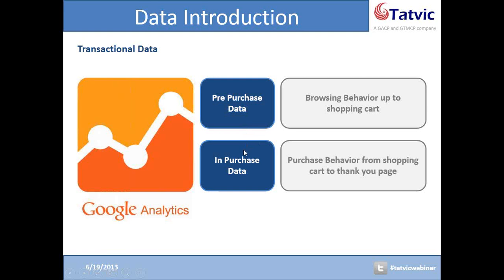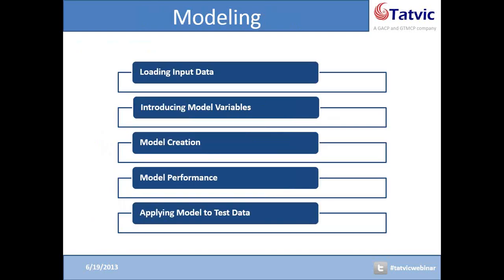Now that we've understood the background of the problem, let me move ahead and talk about the actual modeling process. These are the steps of modeling. First, we will load the input data set — in our case, we will load the training data set from a CSV file in R. Then in the next step, we will introduce the model variables, where we will identify the response variable and the predictor variable. Then we create the actual model using the machine learning technique. Next, we will check the model performance, where we will calculate the accuracy of the model. And finally, we will apply the model to the test data set.